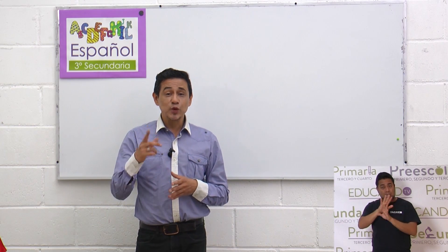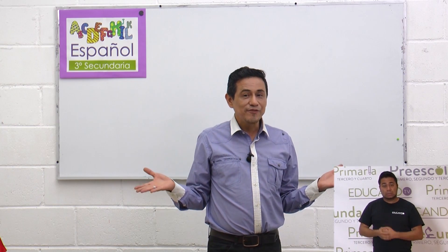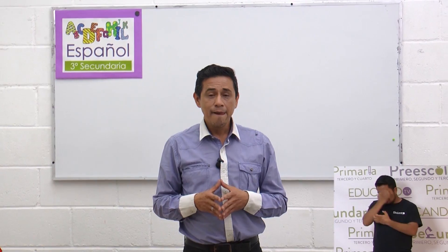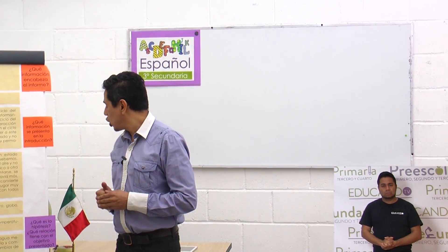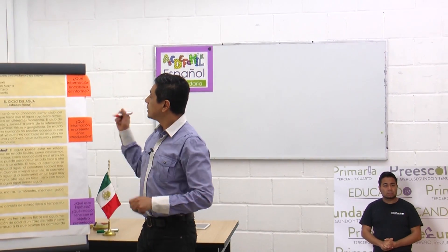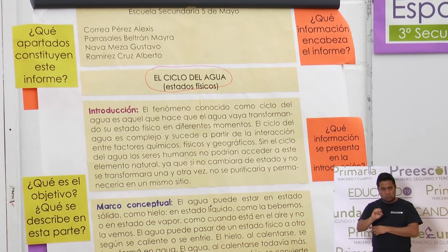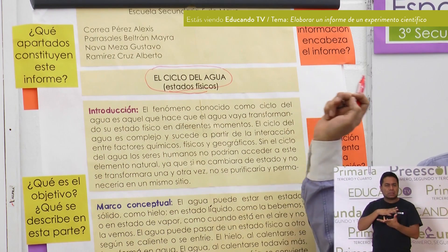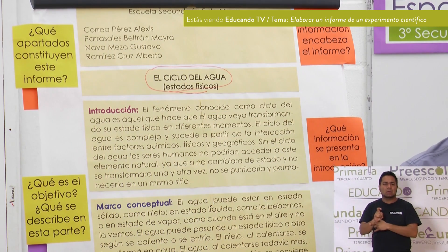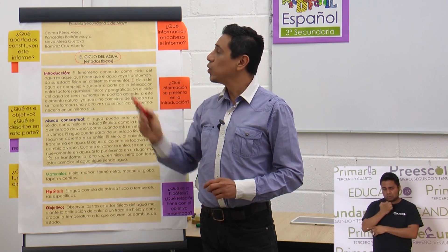Ahora que ya vimos este concepto, vamos a pasar a un ejemplo que está aquí junto a mí. El ejemplo es un informe científico y lo que vamos a hacer es analizarlo. Vamos a empezar con el título: El ciclo del agua. El título ya nos está diciendo de qué se va a tratar el tema: acerca del agua y de sus estados físicos, lo cual tiene que ver con la ciencia. Hasta arriba vemos el nombre de la escuela: Escuela Secundaria 5 de Mayo.